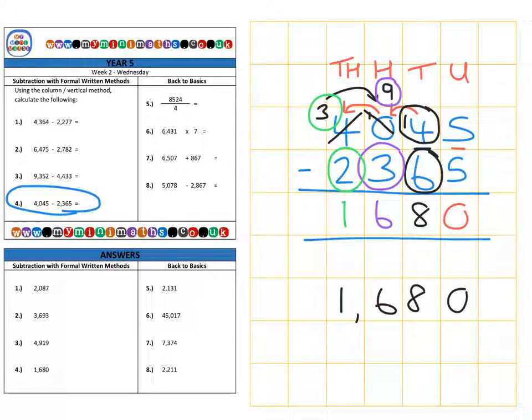So the key point to remember there, when you need to borrow, but there's a zero in the next column, you just move on to the next column. Borrow one from there, but only ever bring it back one column, one step at a time. Thank you very much for listening today. I look forward to speaking to you again soon. Take care.